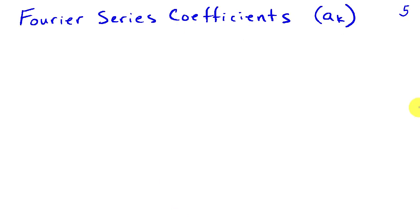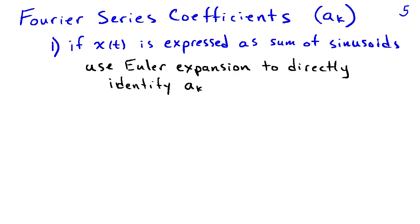So the big question at this point is how do we find those weights, the Fourier series coefficients, the a_k's. And there are two ways that can be used in practice.